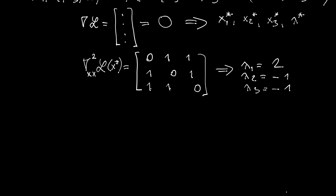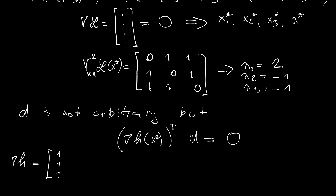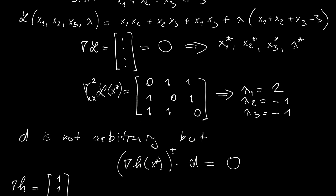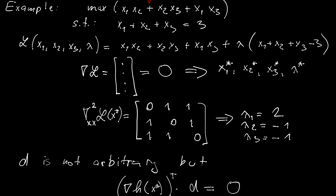But now have a look at how we can take into consideration the fact that D is not arbitrary, but instead it must satisfy, as we have already written up there, it must satisfy the gradient of h—we just have a single h at the critical point—times D is equal to 0. Now the gradient of h is equal to 1, 1, 1, right? Have a look. The h function is over here, so this is my h function, so the gradient is always constant.